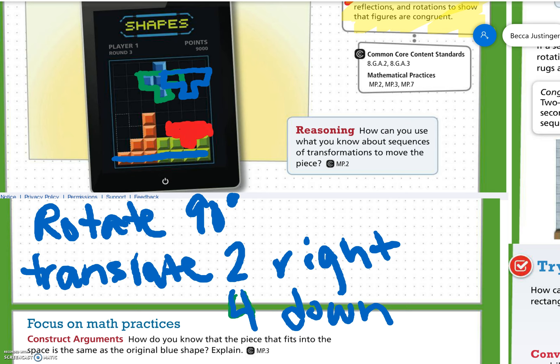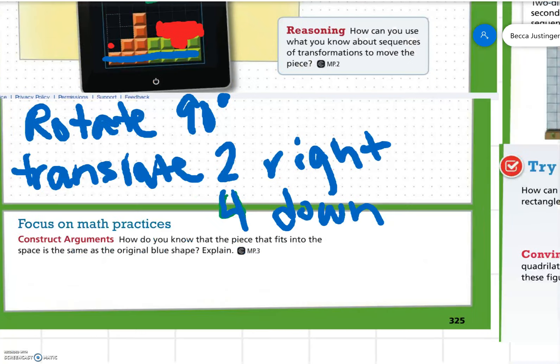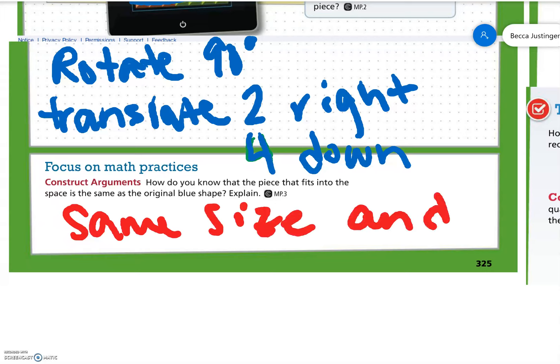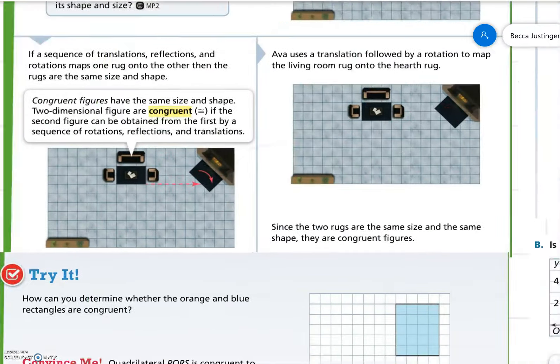And we just need something over here to cancel that second row. Okay, focus on math practices. How do you know that the piece that fits into this space is the same as the original blue piece? Explain. It is the same size and shape. So the piece fits perfectly in.